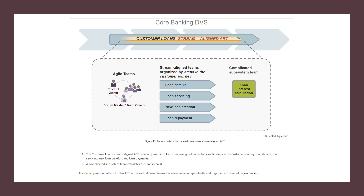This is how we can structure your customer loans stream-aligned ART, which is supported by agile teams, a team coach, and the product owner. The decomposition pattern for this ART works well, allowing teams to deliver value independently and together with limited dependencies. Each team will independently deliver value, and as a whole the ART will also deliver independent value to the organization.